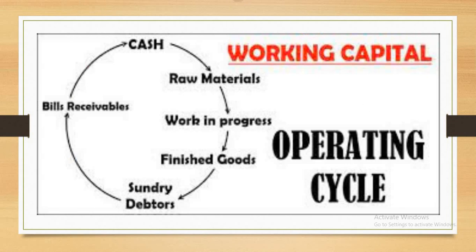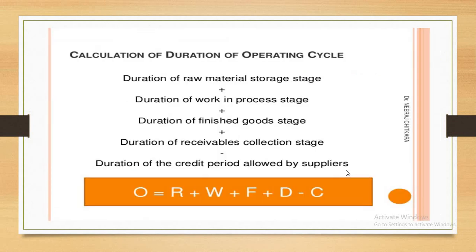Working capital consists of the following in the operating cycle: raw materials, work in progress, finished goods, sundry debtors, receivables, and cash. The calculation of the operating cycle includes: duration of raw material storage stage, duration of work in progress stage, duration of finished goods stage, duration of receivable collection stage, and duration of credit period allowed by suppliers.